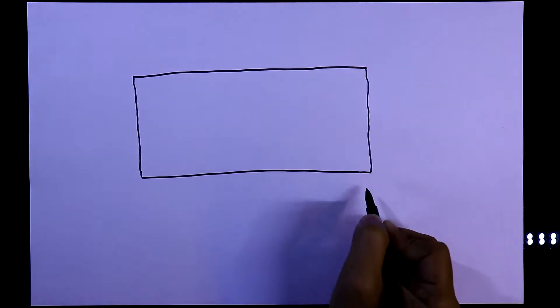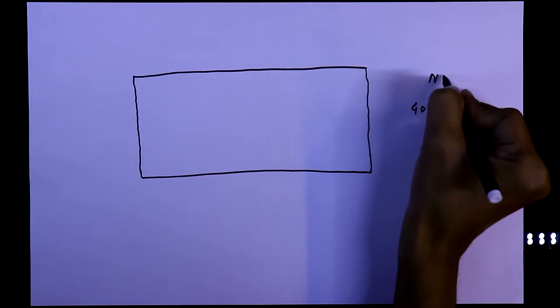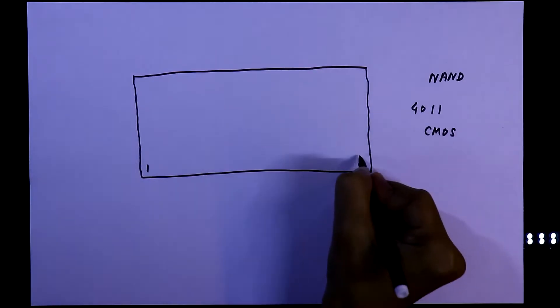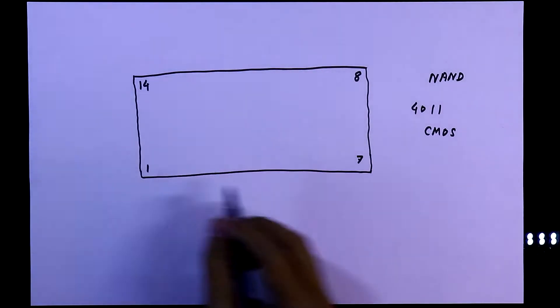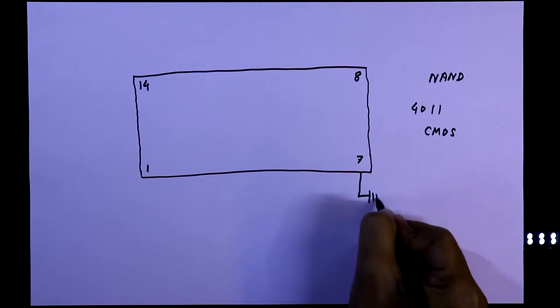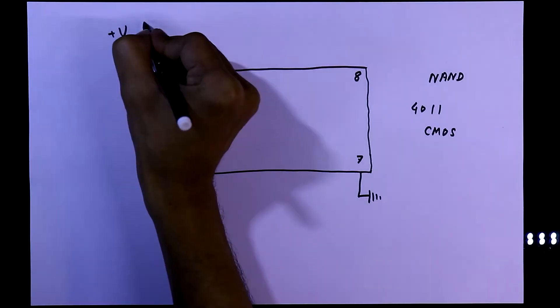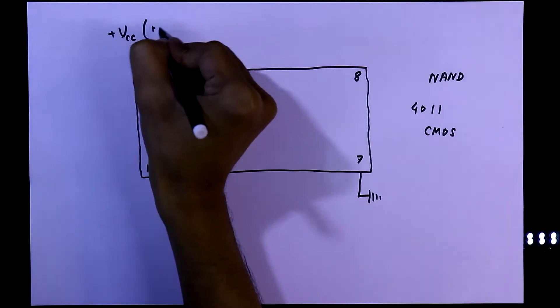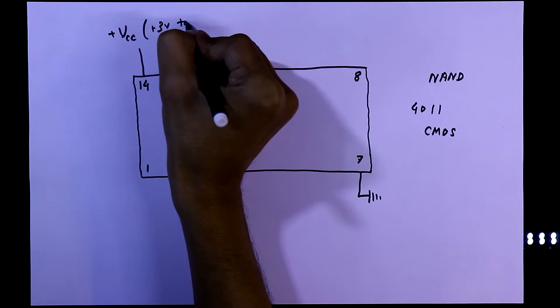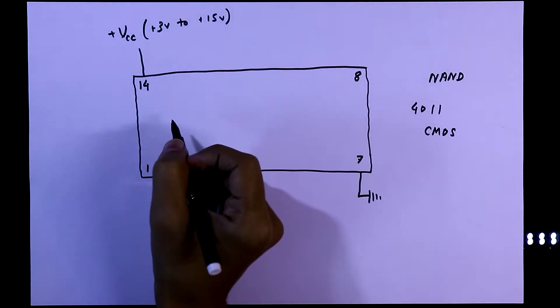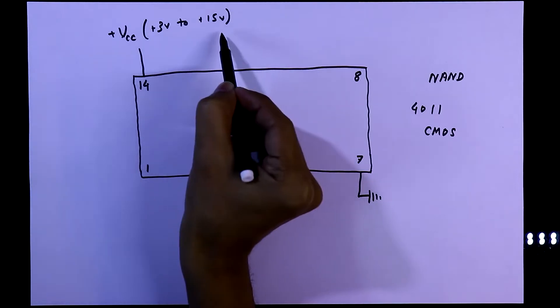This one is IC4011. It is a NAND gate IC, CMOS IC. It has 14 pins. Pin number 7 is ground and pin number 14 is plus VCC. We can apply plus 3V to plus 15V. So this can be our power supply.